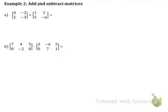In example number two we have to add and subtract matrices. In part A, we are dealing with a two by two matrix plus another two by two matrix. To figure out which elements add to which elements, I'm going to highlight in color which ones match up. Top left matches with top left, top right to top right, bottom left to bottom left, and bottom right to bottom right — those are the corresponding elements. Because we are adding both matrices together, we just add the corresponding elements together.